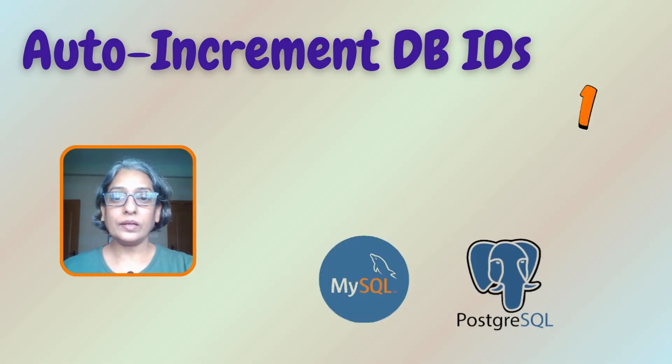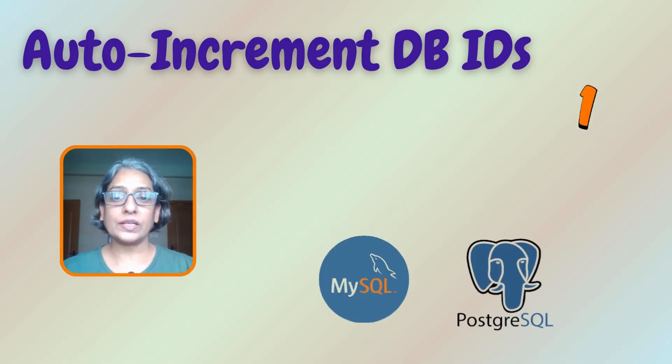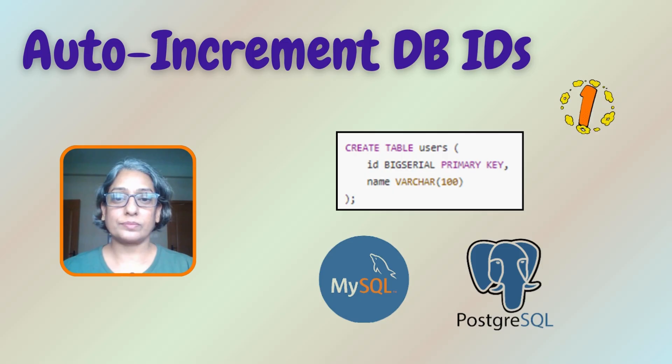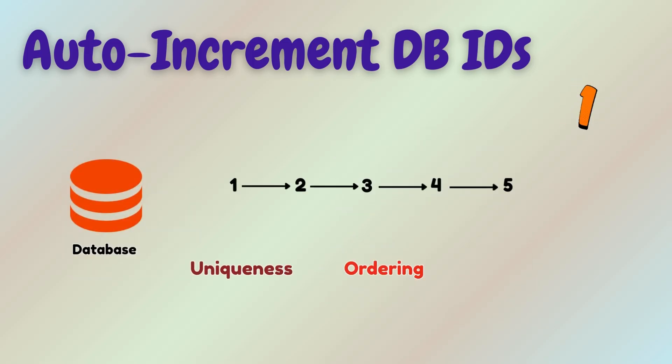Let's start with the most basic approach: using your database to auto-generate IDs. In MySQL and Postgres, this is as easy as shown here. The database guarantees uniqueness, ordering, and simplicity.